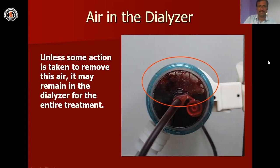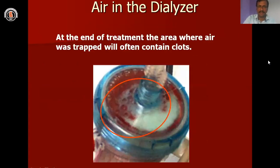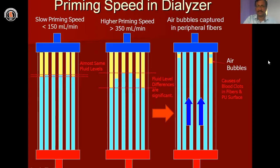If air enters the dialysis, there will be a complete membrane block. Because of the membrane block, there will be more blood loss, more clotting, and you will also lose membrane function. Clearance is going to come down. Overall, major complications will occur in patients. How many membranes are blocked — that many membranes are damaged — and the clearance is going to come down proportionally.